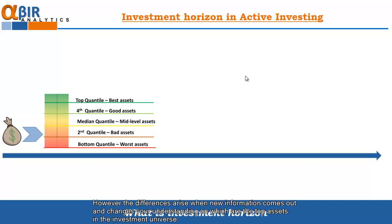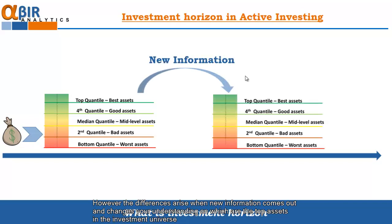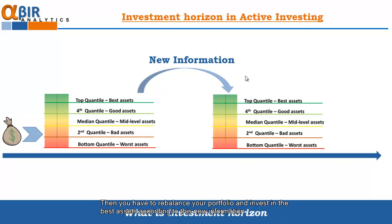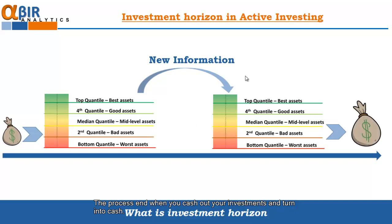the differences arise when the new information comes out and changes your understanding of which are the top assets in the investment universe. Then you have to rebalance your portfolio and invest in the best assets according to this new information. The process ends again when you cash out your investments and turn into cash.